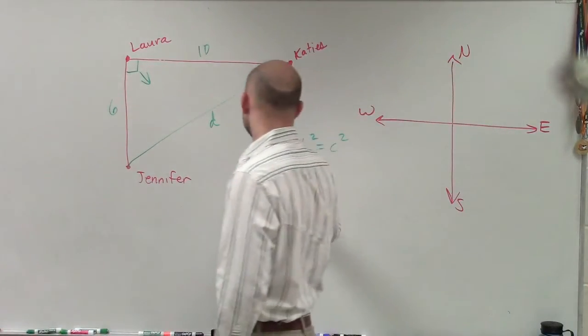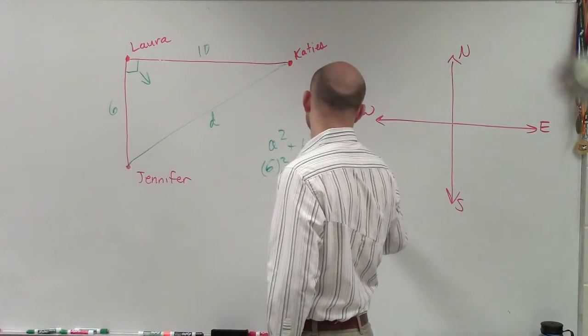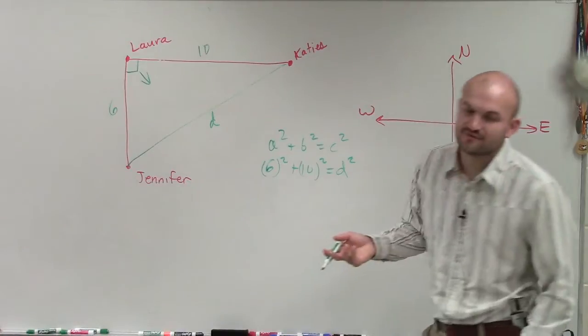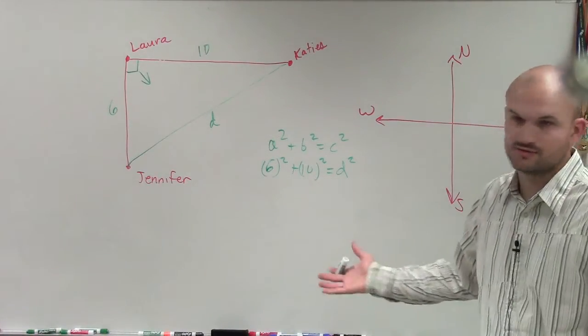So therefore, we could say it's 6 squared plus 10 squared equals d squared. Now, you could use c if you want to. It doesn't really matter what variable you use. I just want to use d because we're representing distance.